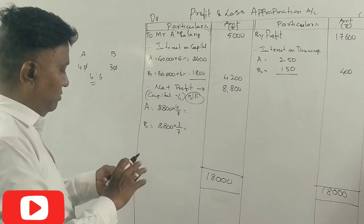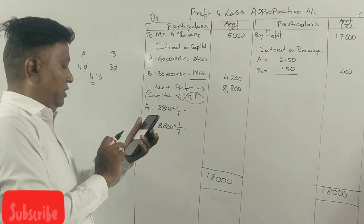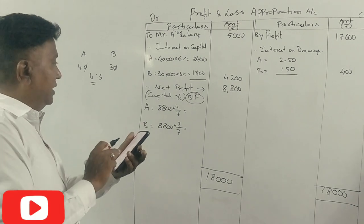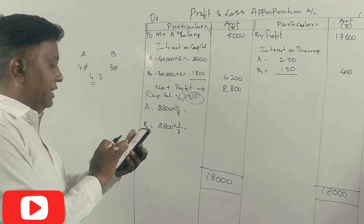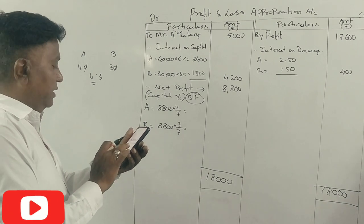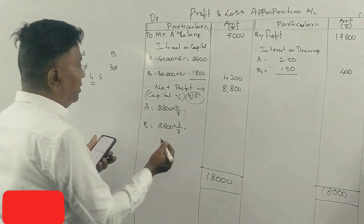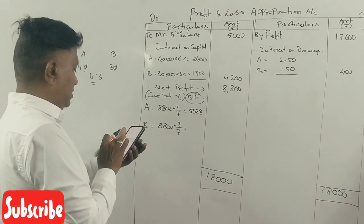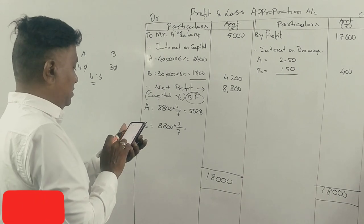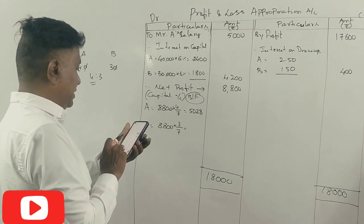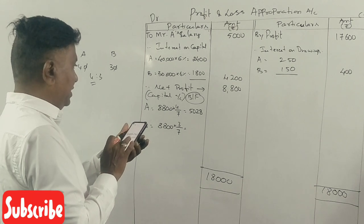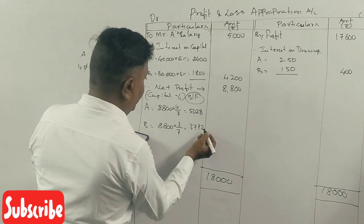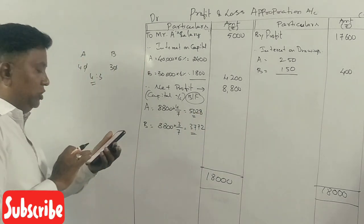A gets Rs. 8,800 divided by 7 times 4, which equals Rs. 5,028. B gets Rs. 8,800 divided by 7 times 3, which equals Rs. 3,772.